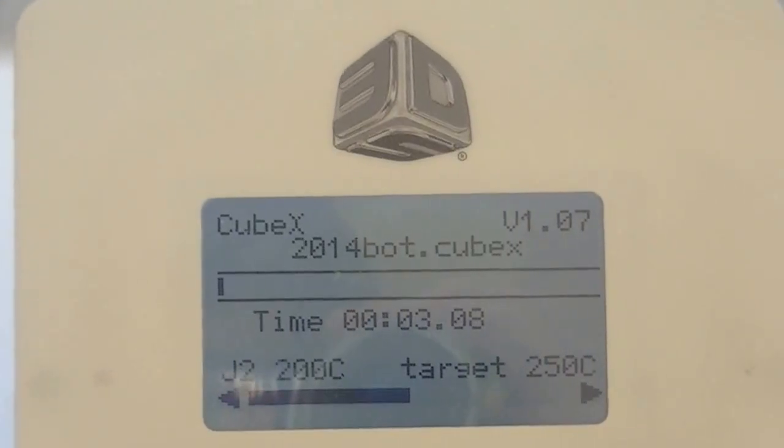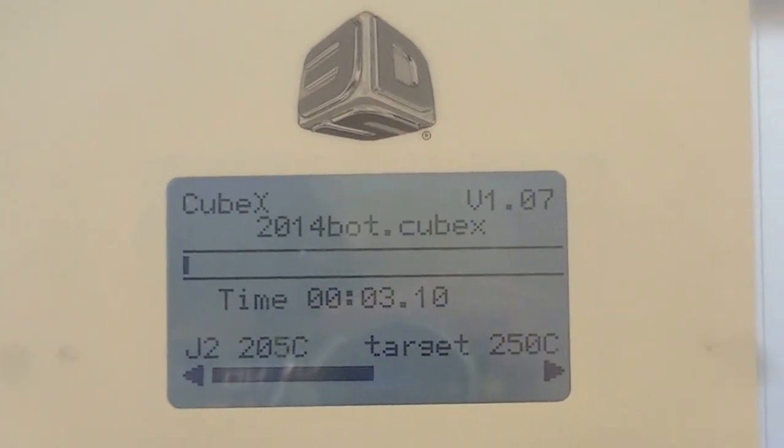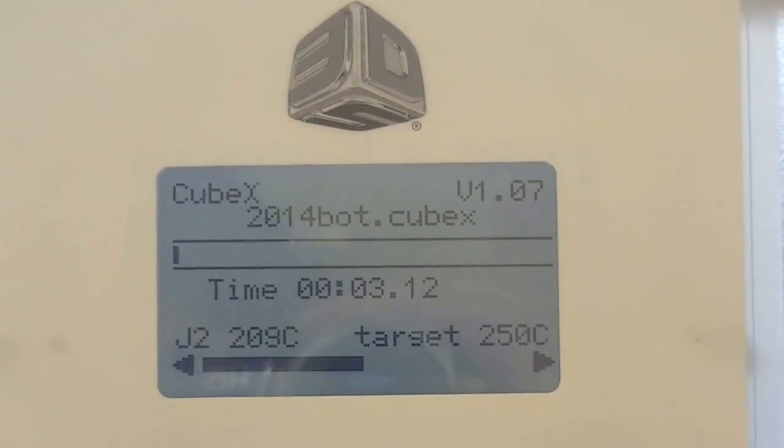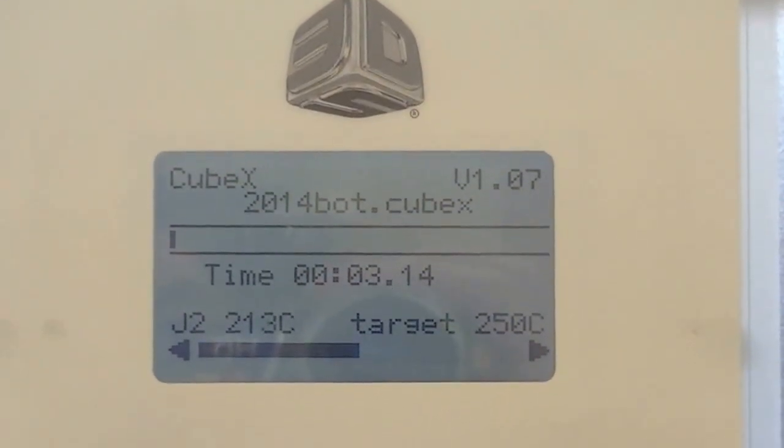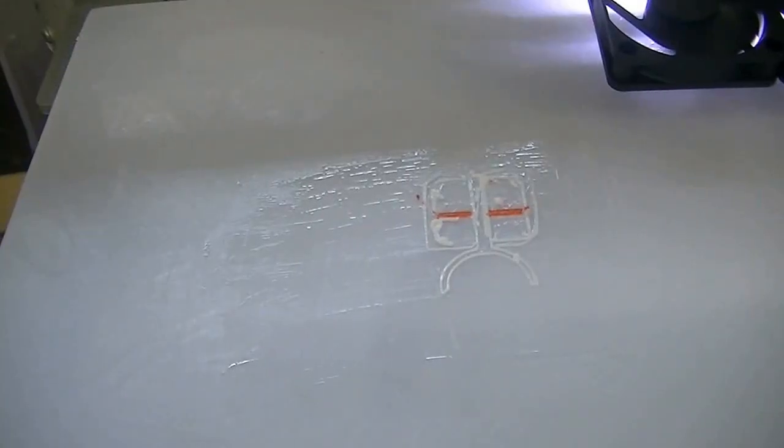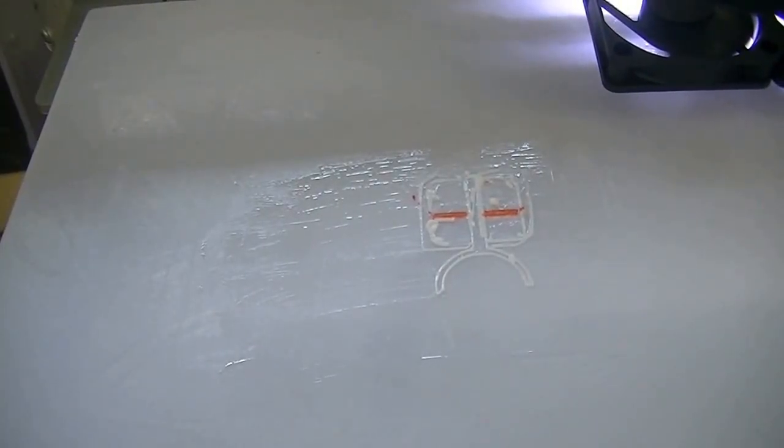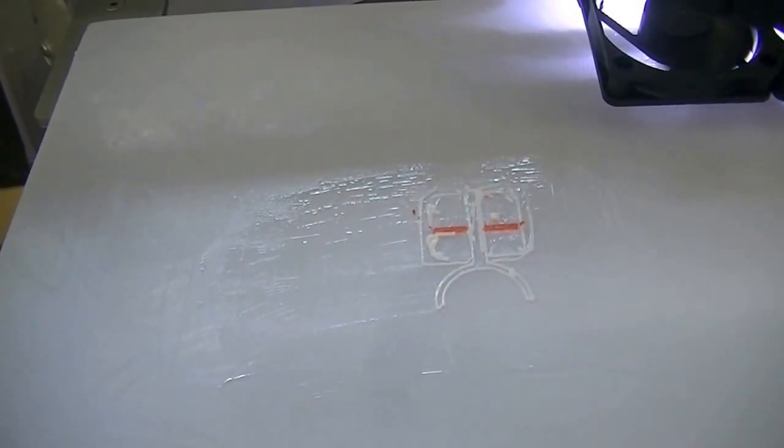The display is currently reading out the temperatures of both of the print jets. This job will require white as well as red. Now you can see that the printer has applied both colors.